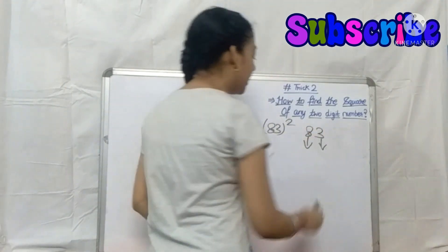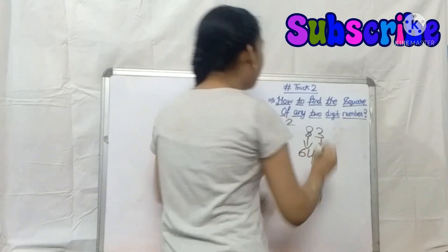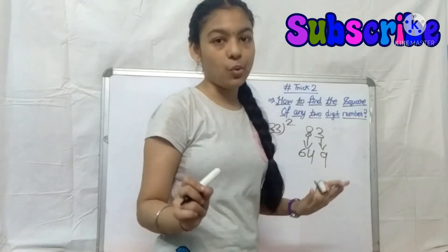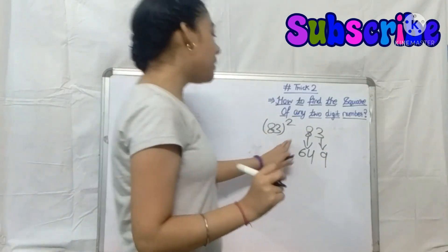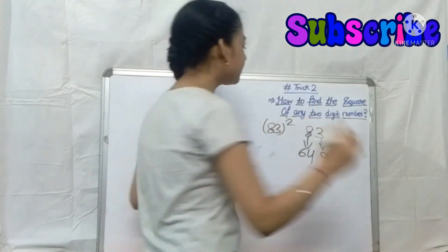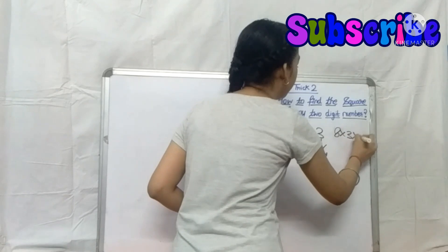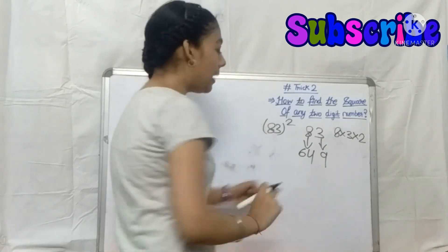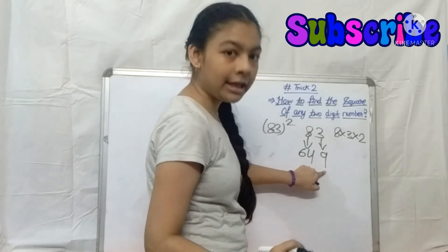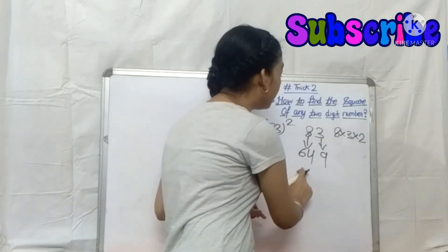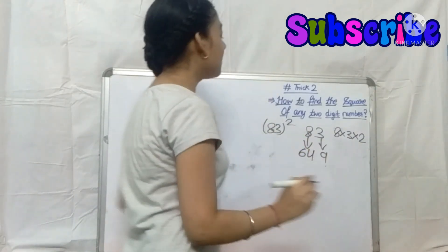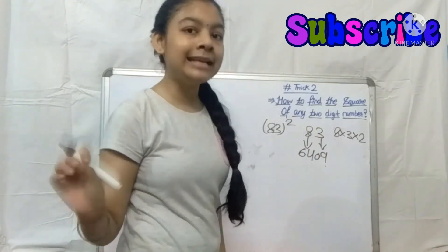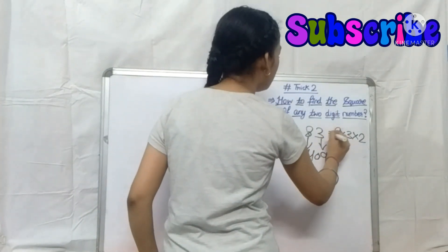Now let's look at the second example: 83. Here we have 3 digits in the result from squaring each part. Step 1: 3 squared is 9 and 8 squared is 64, giving us 6409. Since 3 squared gives only 1 digit, we place a 0 to keep 4 digits: 6409. Step 2: 8 into 3 into 2 equals 48.